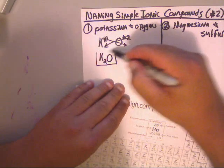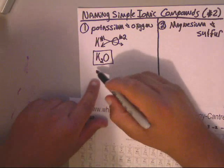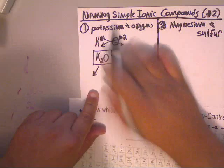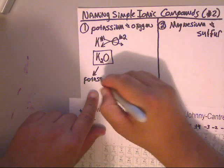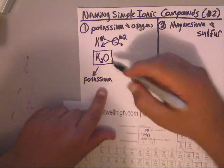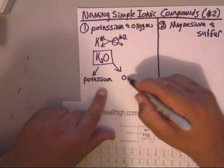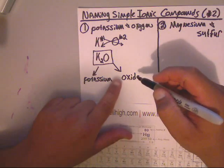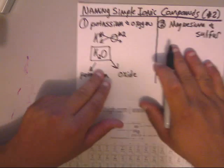Now as far as naming this guy, it's kind of easy. Remember, no prefixes are used. This is potassium, okay. Now oxygen is still going to be just oxide. Notice, once again, no prefixes. Not monoxide, just oxide, okay.